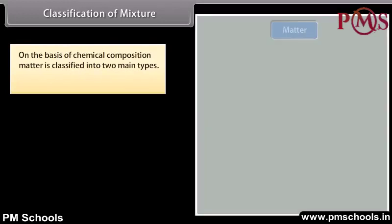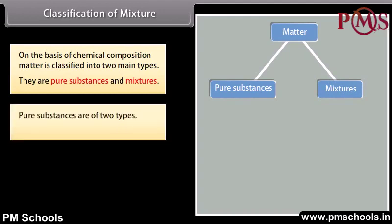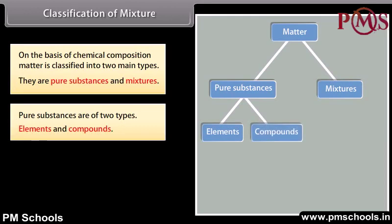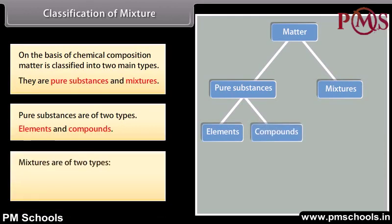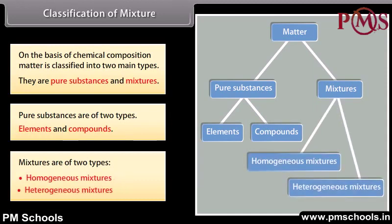Classification of mixtures: On the basis of chemical composition, matter is classified into two main types — pure substances and mixtures. Pure substances are of two types: elements and compounds. Mixtures are also of two types: homogeneous mixtures and heterogeneous mixtures.